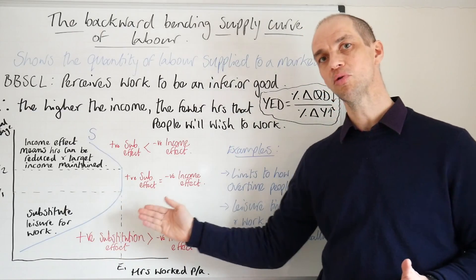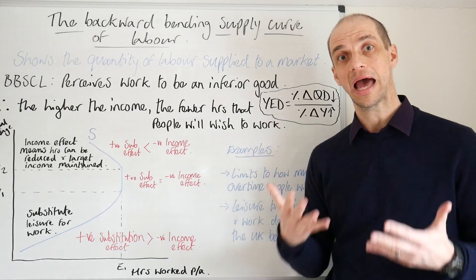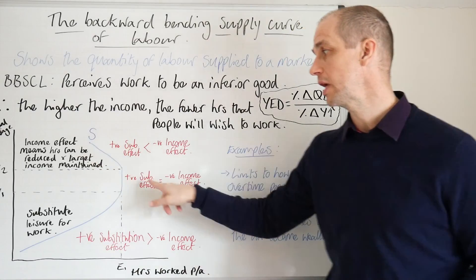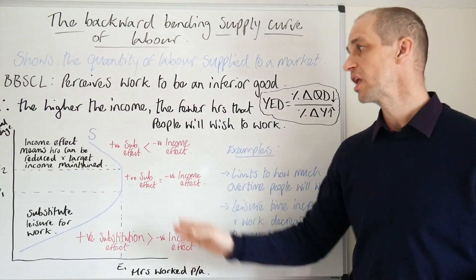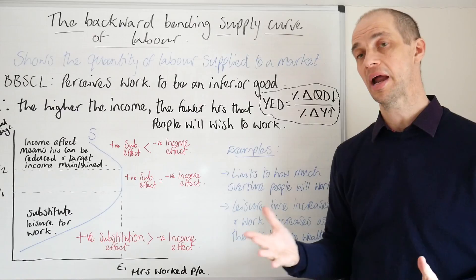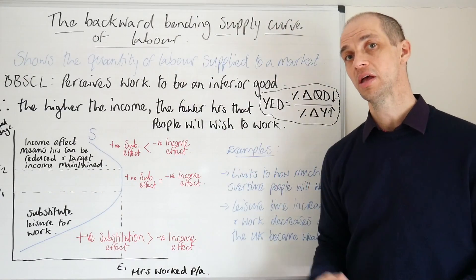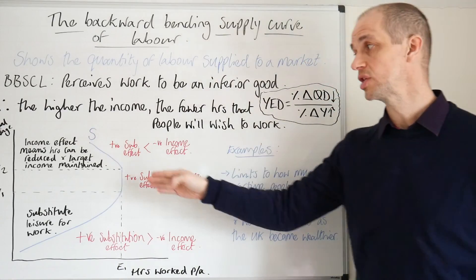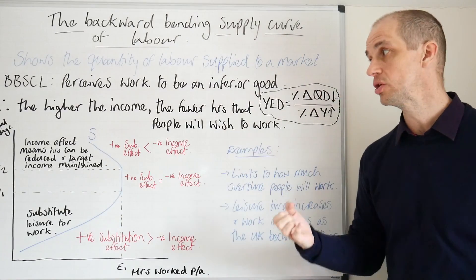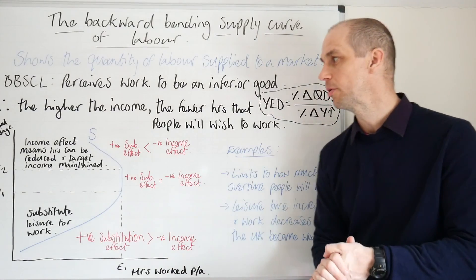Essentially, leisure time is becoming more and more valuable. As leisure time becomes more valuable, you need time to actually allocate your income and go and spend the money you've earned. We can see then that the curve begins to bend backwards and it begins to reduce the number of hours worked. We've got a positive substitution effect, but this is far, far smaller than the negative income effect apparent here. The income effect means that hours can be reduced and the target income can still be maintained at these higher levels. So you can reduce the number of hours you're working but still sustain a very high level of income — that's certainly what Richard Branson has achieved by relocating to the Bahamas.